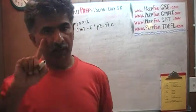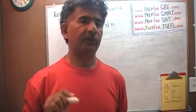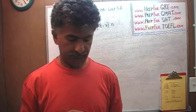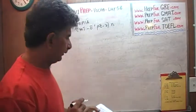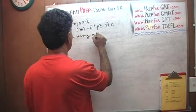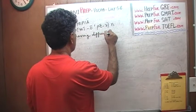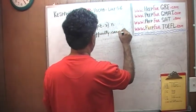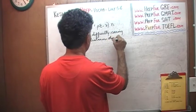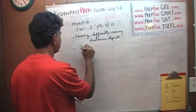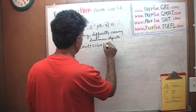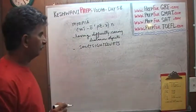Myopia is a disease of the eyes. It makes it difficult to see distant objects, and if you are unable to see distant objects that disease is called short-sightedness — and that's called myopia. Having difficulty seeing distant objects, or short-sightedness.